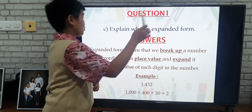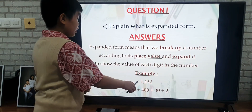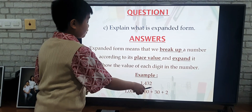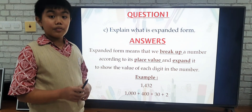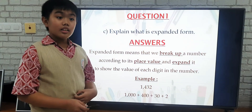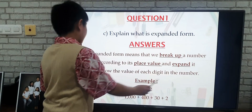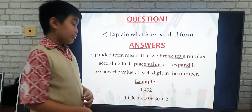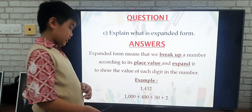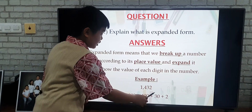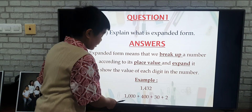Explain what expanded form is. Expanded form means that we break up a number. For example, 1,432 — according to its place value: 1 is for 1,000; 4 is in the 100s place; 3 is in the 10s place; 2 is in the 1s place. So we expand it to show the value of each digit. It will be like this: 1,000 plus 400 plus 30 plus 2. So this is the example of expanded form.